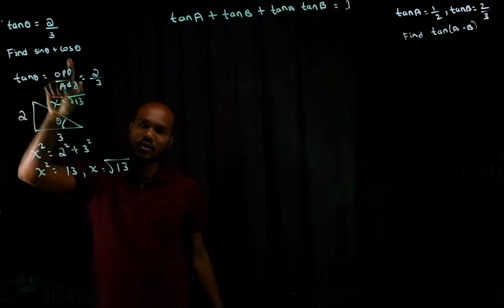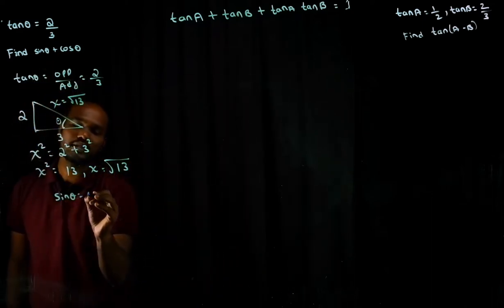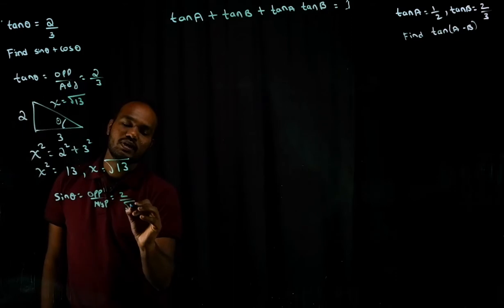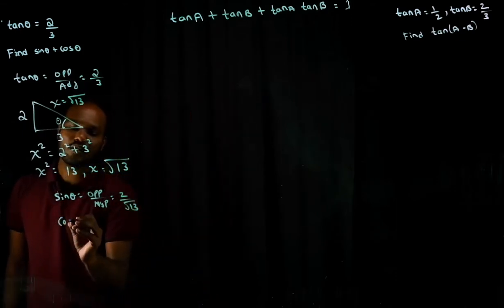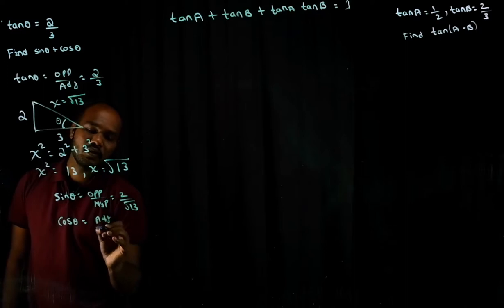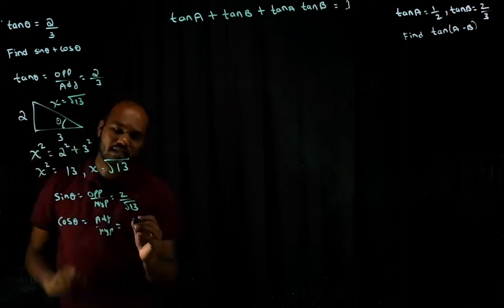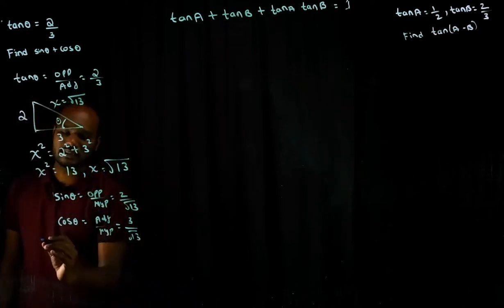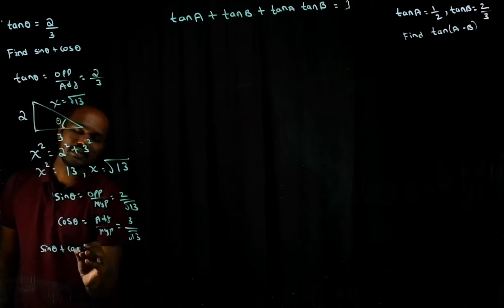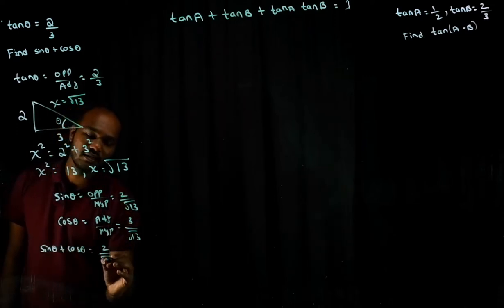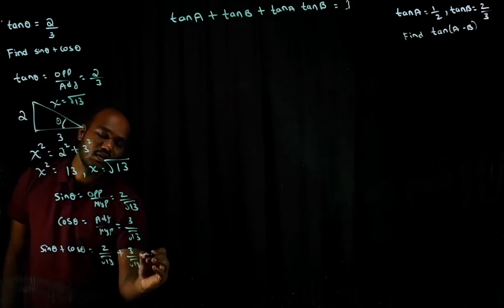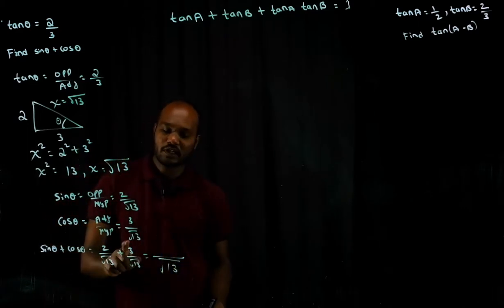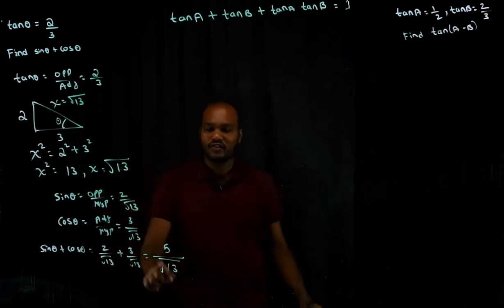So what we need: sine theta and cos theta. We know sine theta is opposite by hypotenuse, so this will become 2 by root 13. Next, cos theta is adjacent by hypotenuse, so what is adjacent here? 3, so cos theta is 3 over root 13. Now we have to calculate sine theta plus cos theta, which equals 2 by root 13 plus 3 by root 13. Root 13 is the common denominator, so 2 plus 3 is 5. The solution is 5 by root 13.